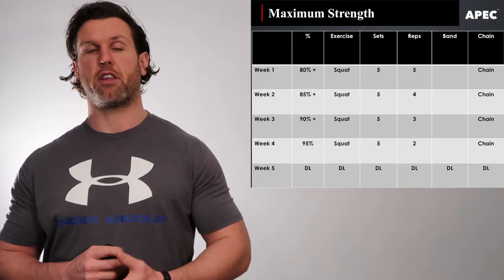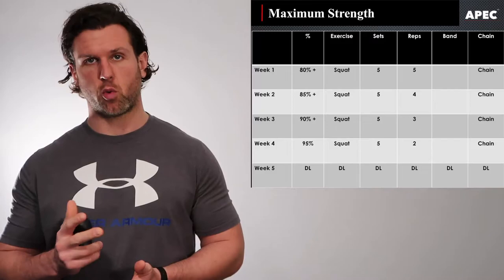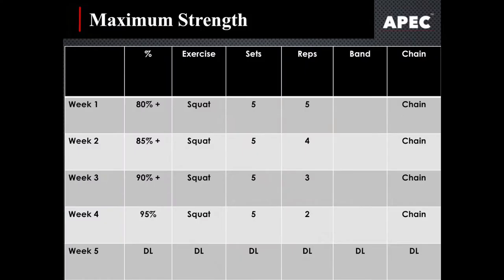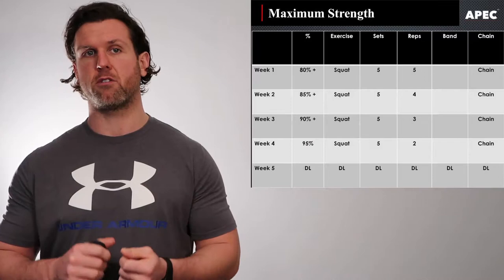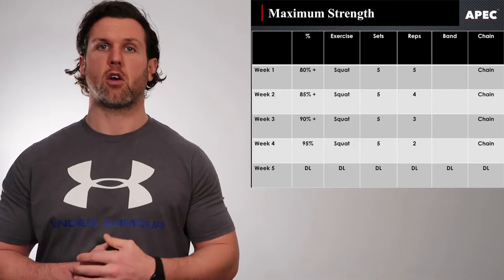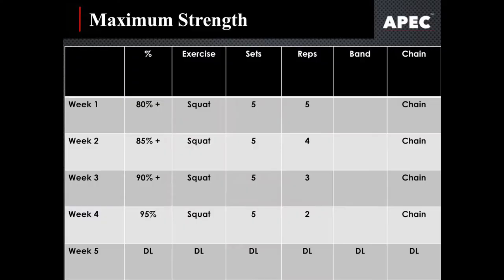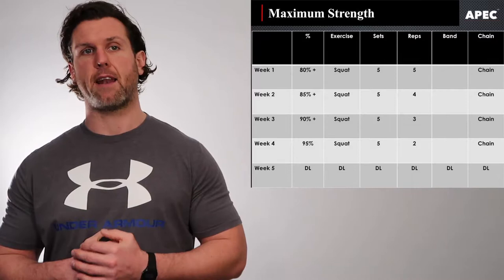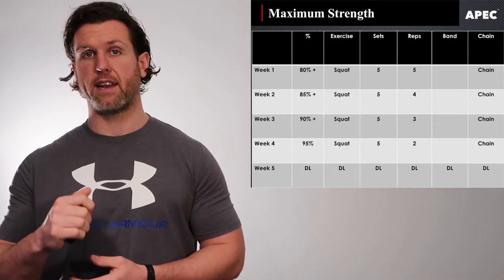Week 1: 80-plus percent — that's max strength. The exercise is a squat, 5 sets of 5 repetitions, with chain as the training tool, because chain goes nicely with max strength-type training. Week 2: we've gone to 85%, the exercise stays as the squat, still 5 sets, but the reps have come down to 1 to 4 repetitions, and the training tool remains chain. So the percentage method has increased by 5% while the repetition has come down by 1.